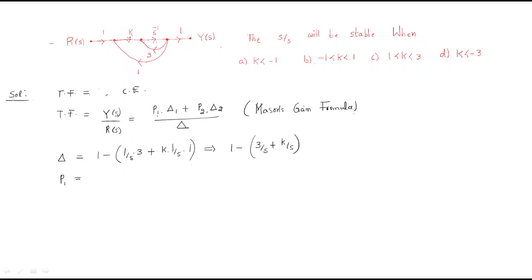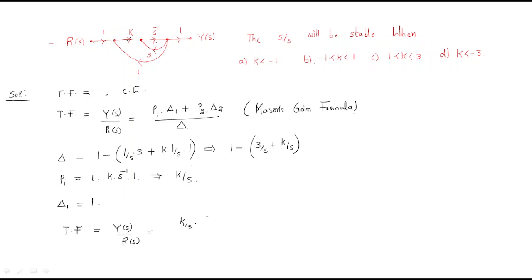Now we identify the forward paths. There is one forward path: P₁ = 1×k×s⁻¹×1 = k/s. There are no other forward paths. For Δ₁, since both loops touch the forward path, Δ₁ = 1. The transfer function T(s) = y(s)/r(s) = P₁Δ₁/Δ = (k/s)×1 / Δ.